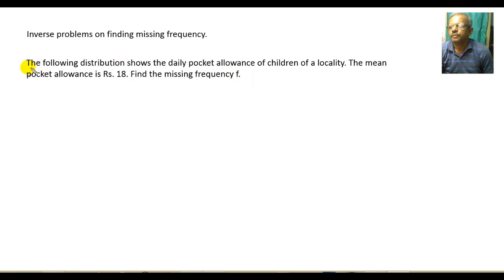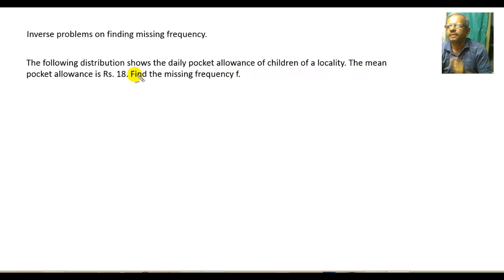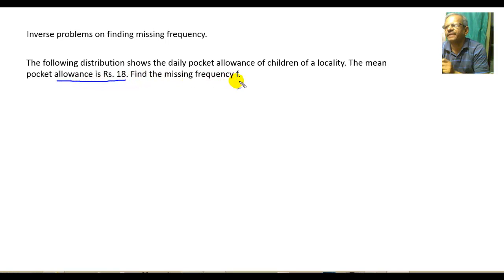The first question: the following distribution shows the daily pocket allowance of children of a locality. The mean pocket allowance is Rs18. Find the missing frequency F.